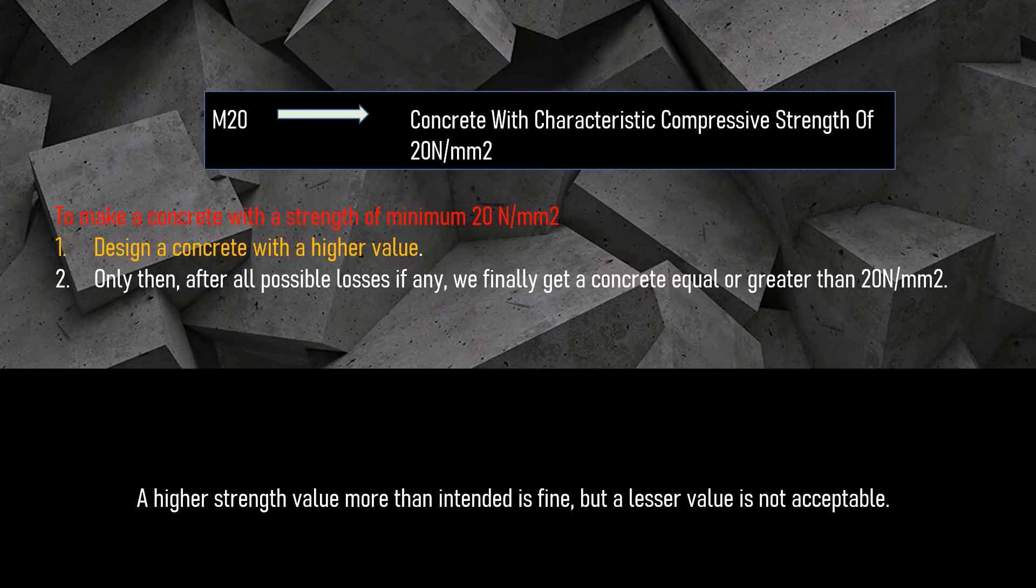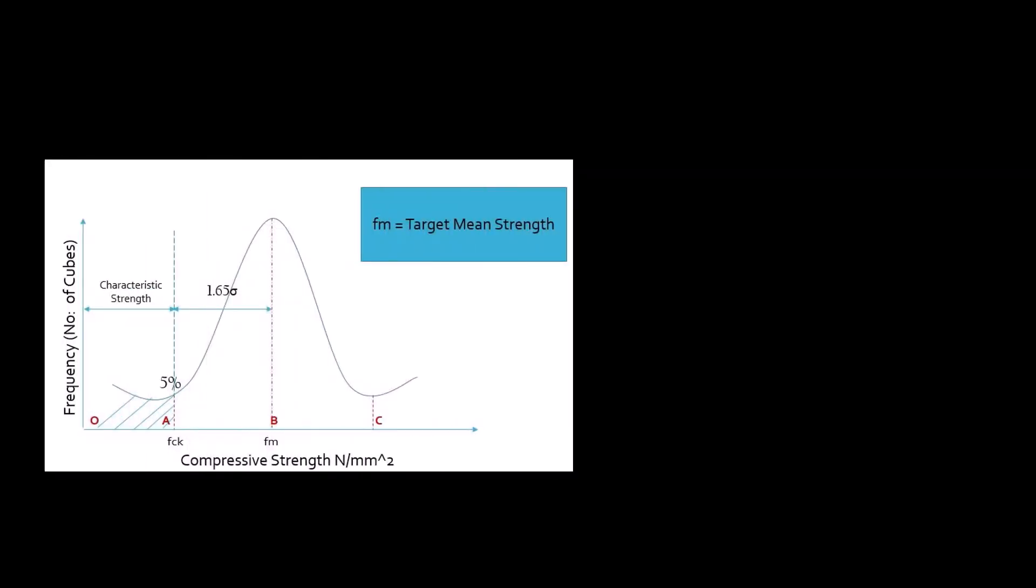In the above equation explained, the quantity 1.65 sigma represents the margin by which the target mean strength must exceed the required characteristic strength, and it is called as a current margin.